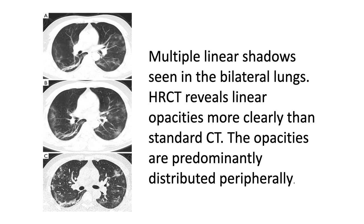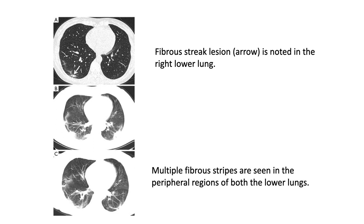Coming to linear opacities and fibrous streaks. Multiple linear shadows are seen in bilateral lungs; HRCT reveals linear opacities more clearly than standard CT. They are predominantly distributed peripherally. There are also nodular opacities present. Fibrous streak lesions are seen in the peripheral regions of both lower lungs.